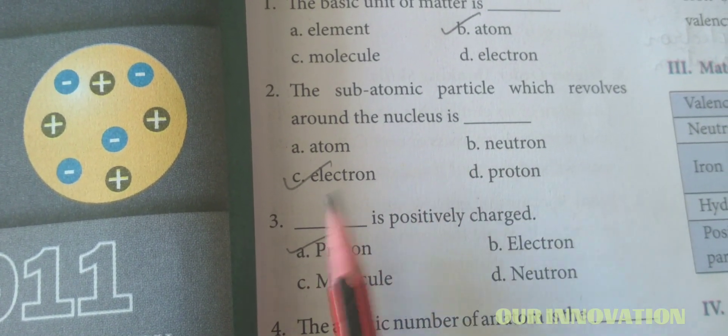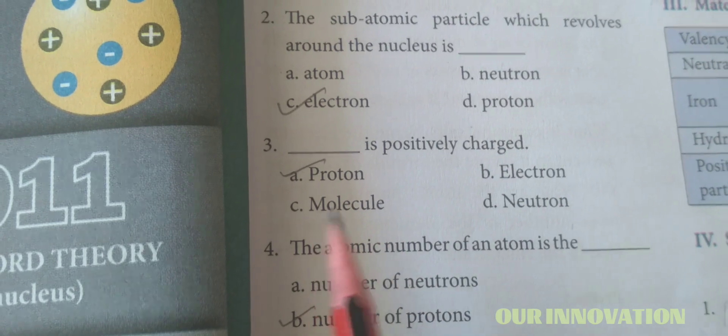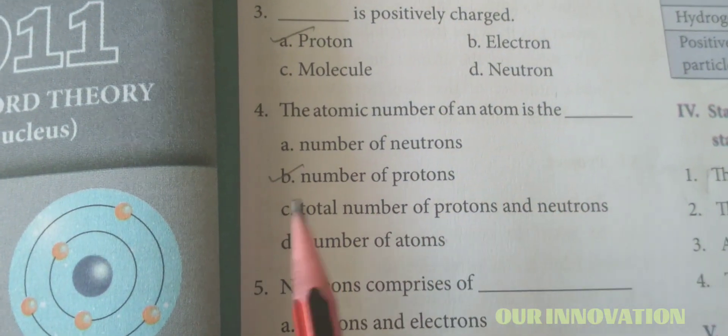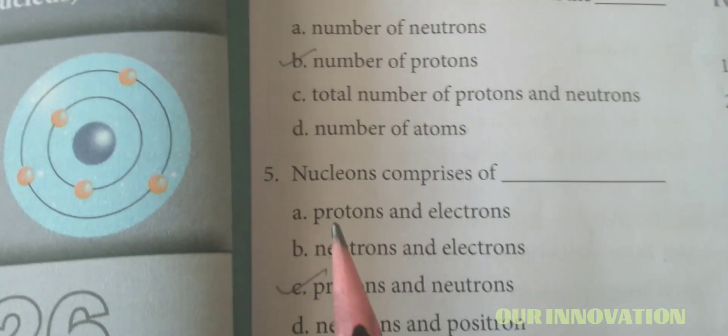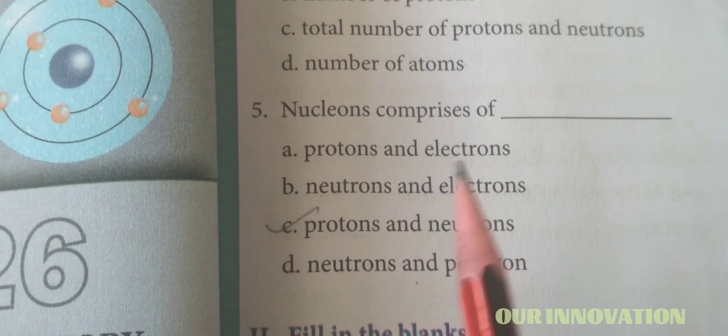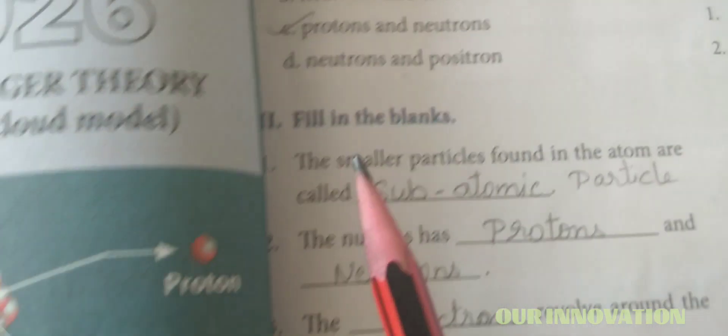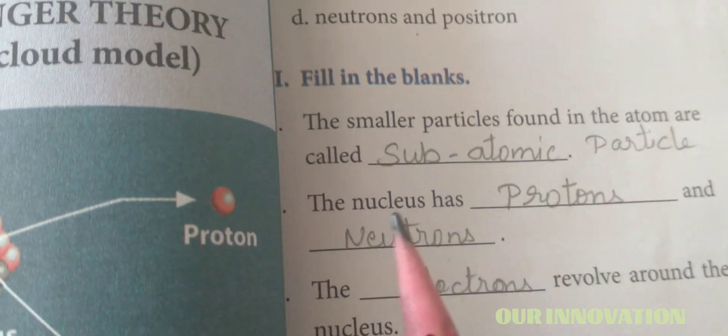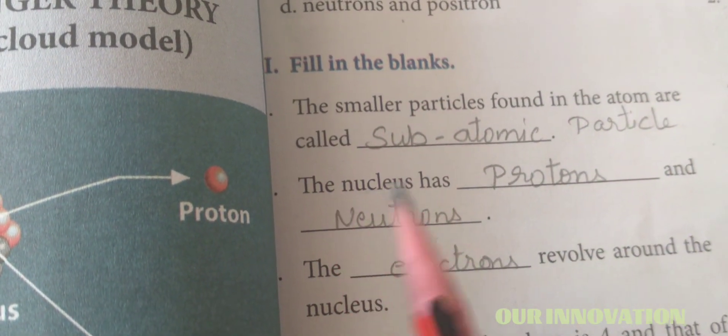Proton is positively charged. The atomic number of an atom is the number of protons. Nucleons comprise of protons and neutrons.